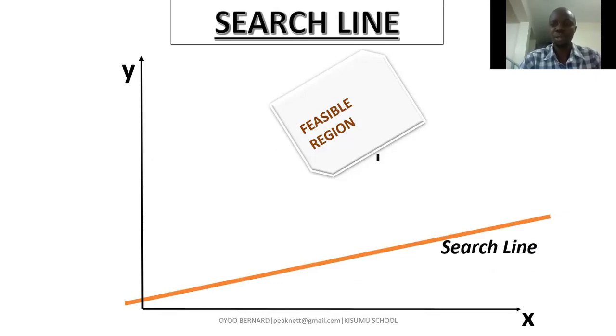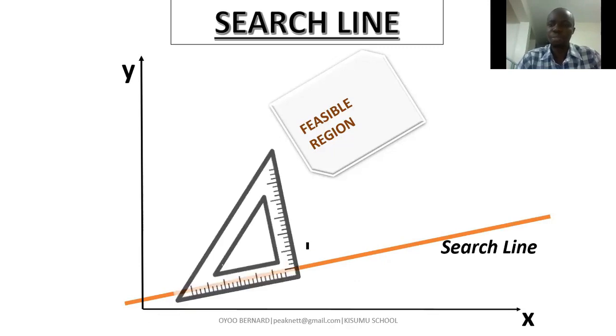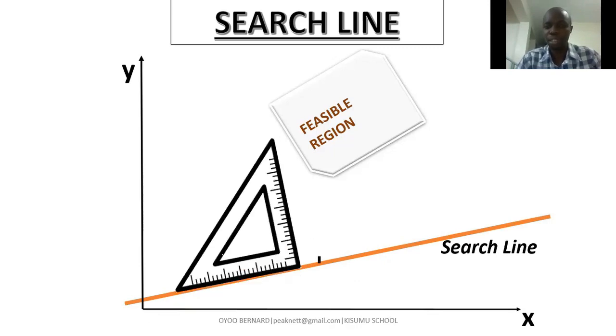Now, all you need to do or all that you require at this point are a set square and a ruler, both of which will be placed along the search line. So you place the ruler along the search line, and then your set square along the search line such that it's perpendicular to it. This is how you will do it. Now, bring your ruler, place it along the search line such that it's touching this edge of the set square.